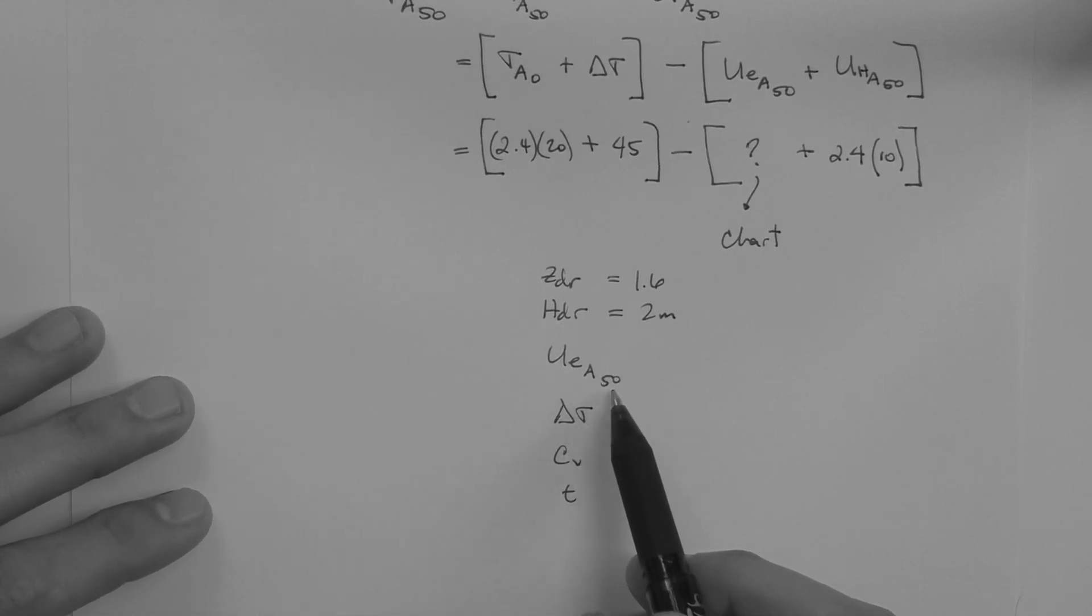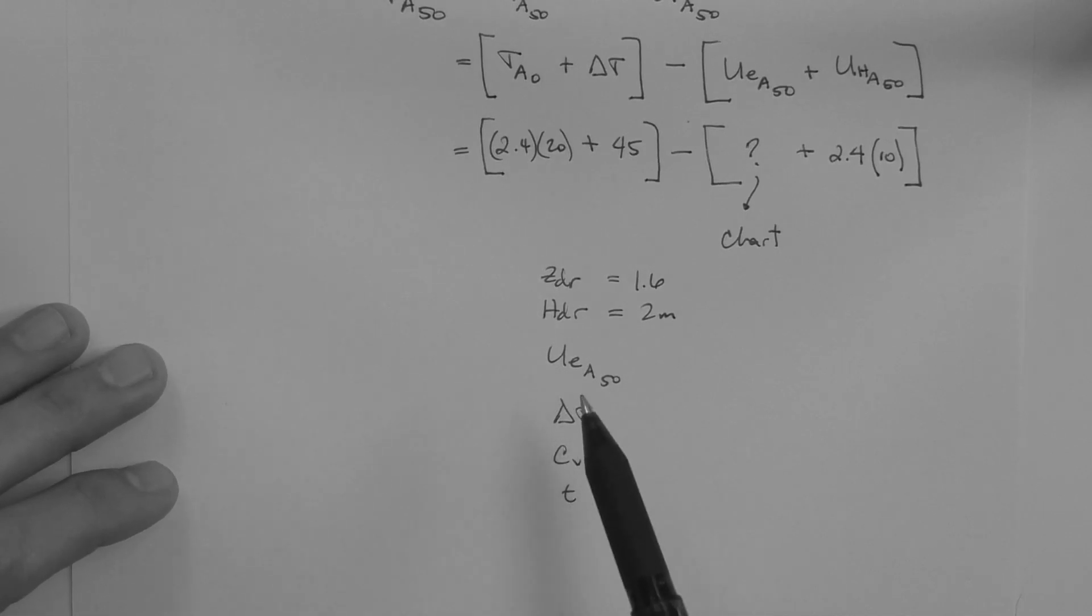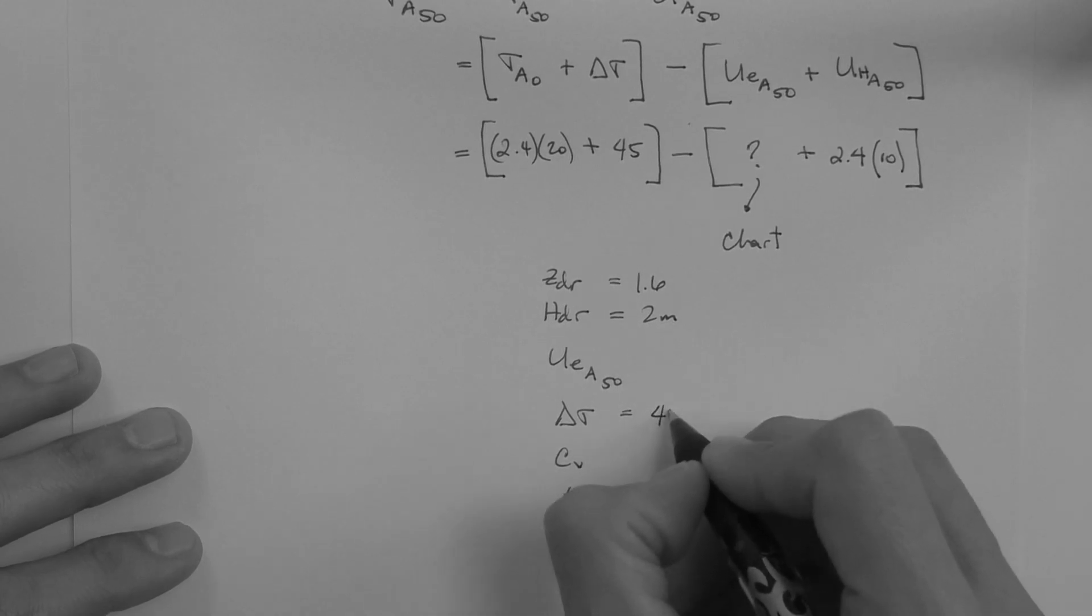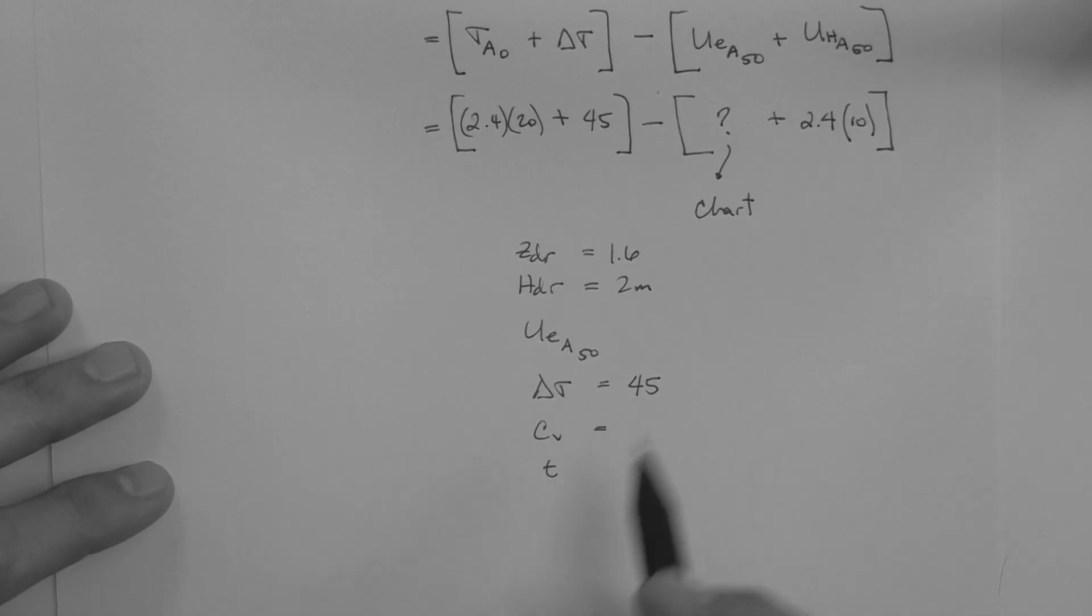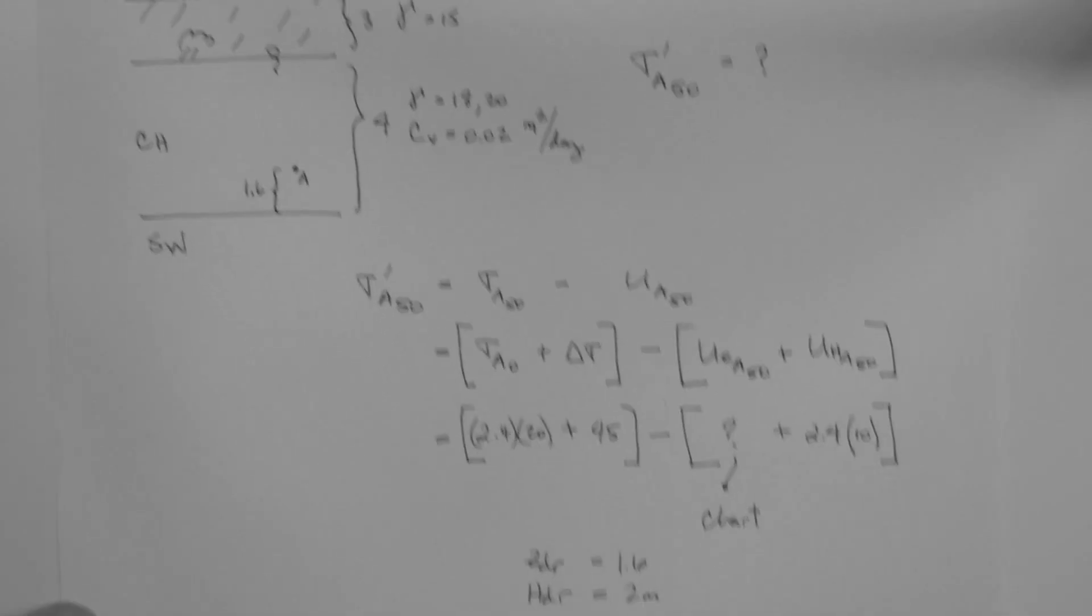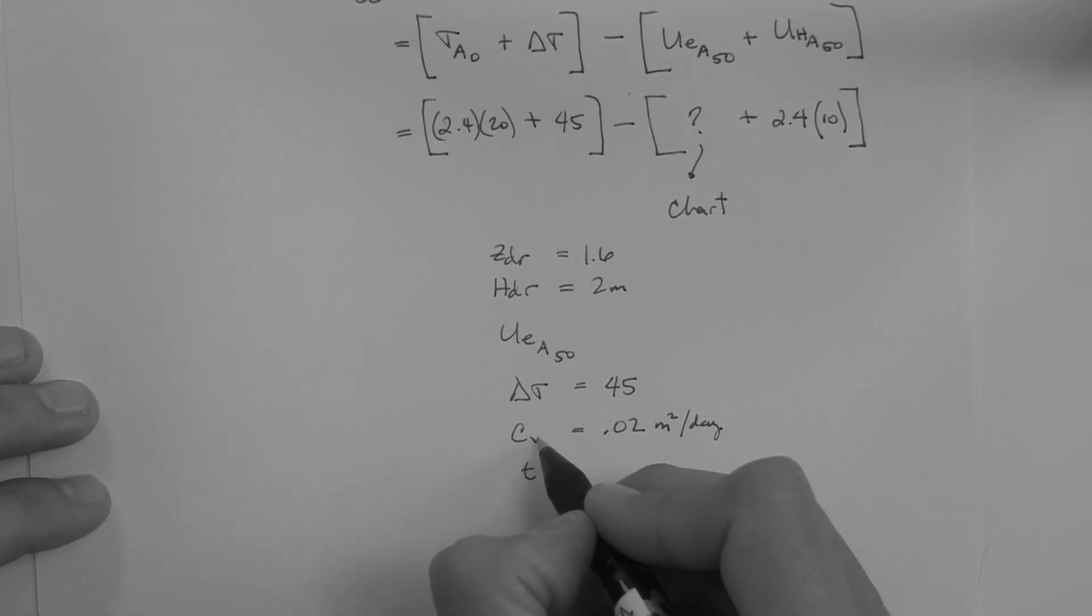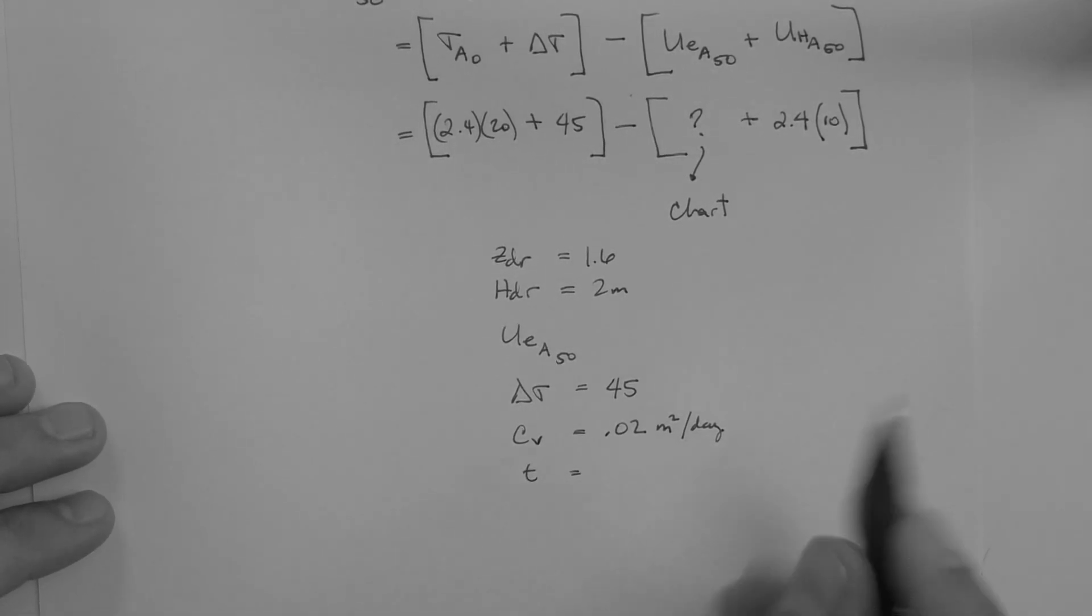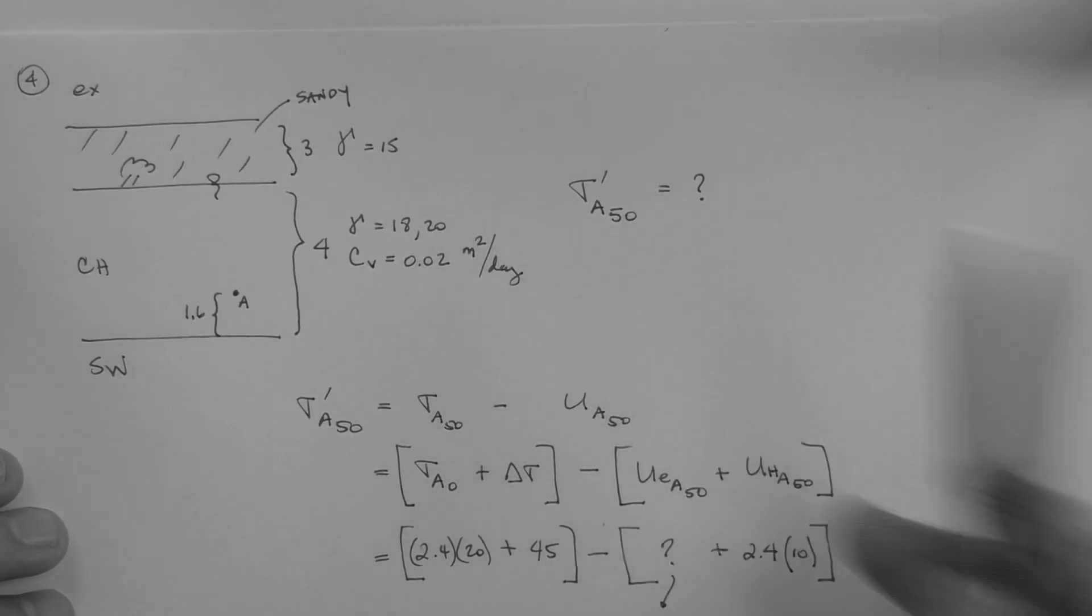The excess pore pressure at time equals 50 at point A is essentially what we are going to be getting with the use of the chart. Delta sigma is 45, 3 times 15. We already know that. CV is given. CV is a soil parameter provided by the lab, 0.02 meters squared per day. The compenetration test can also serve to get an estimate of this parameter. And the time in question is the one up here, part of the question, 50 days.